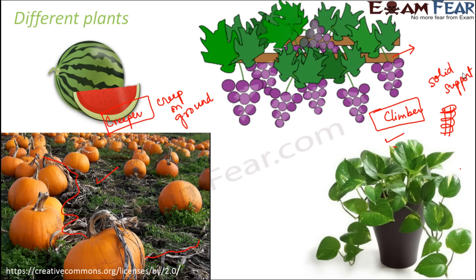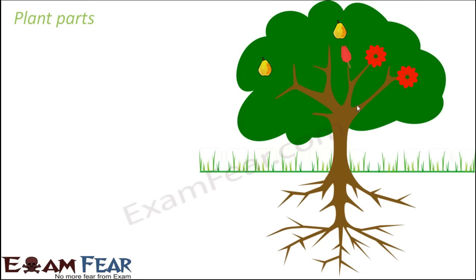These are not the only examples of climbers and creepers — there are many others. Hereafter, when you visit a park or a garden with a variety of plants, try to observe them and find out if they are an herb, shrub, or tree, or if they are a creeper or a climber.